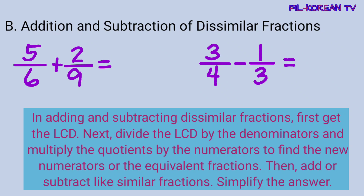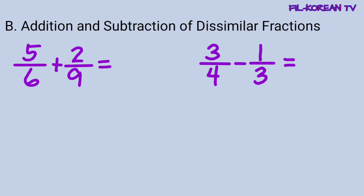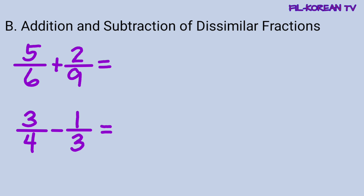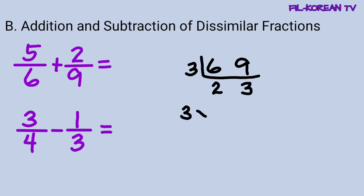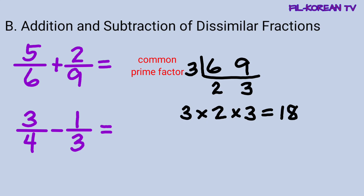Ngayon, isolve natin ang problems gamit ang steps na ito. Let's add 5 sixths plus 2 ninths. Ang una nating gagawin ay kukuha natin yung LCD. Gamitin natin ang continuous division method para makuha yung LCD. Ang denominator na 6 at 9 ay i-divide natin sa kanilang common prime factor na 3. 6 divided by 3 equals 2. 9 divided by 3 equals 3. So yung 2 at 3, wala na silang common prime factor. Kaya hindi na tayo mag-divide. Sunod, i-multiply lang natin itong common prime factor nila at ang quotient. 3 times 2 times 3 equals 18. Itong 18 ang gagamitin nating LCD.